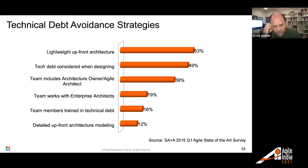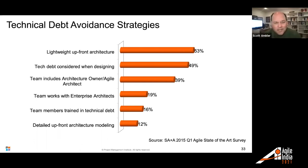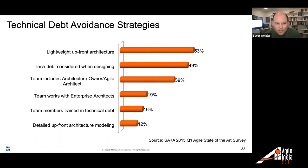This is some stats from about six years ago. We do see agile teams doing lightweight upfront architecture and teams working with enterprise architects. Some teams are including architects or some sort of architecture owner. We're seeing progress, but there's significant room for improvement.